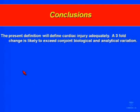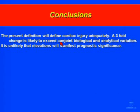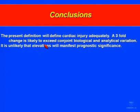Where do these data take us? The present definition—whether three-fold, one-fold, or tenfold—will define cardiac injury because that's what troponin means. A three-fold change is likely to overcome any problems with conjoint biologic or analytic variability, so we can say for sure it's different from baseline. But it's unlikely these elevations will manifest prognostic significance. We might find a group where we occluded the LAD for three hours, but in the larger sense of all PCIs, that group is unlikely to be large enough to drive utility of routine monitoring.